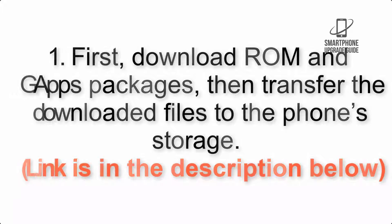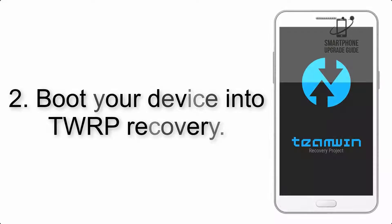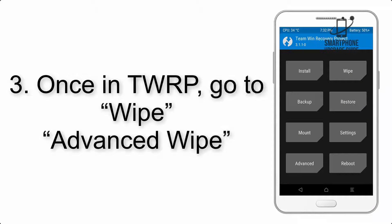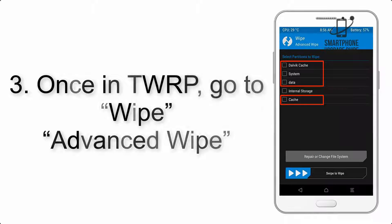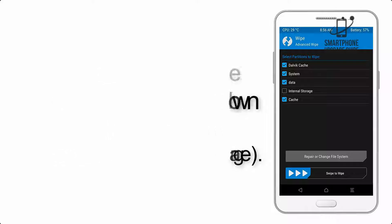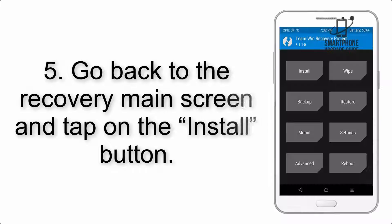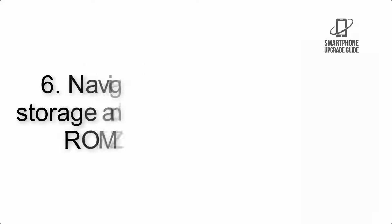Step 2: Boot your device into TWRP recovery. Once in TWRP, click on Advanced Wipe and select the checkboxes as shown in the image, excluding internal storage. Step 4: Swipe the button to wipe the device.